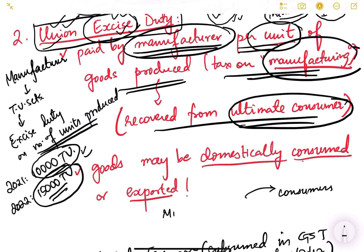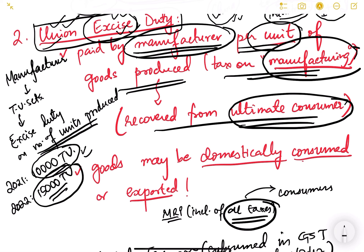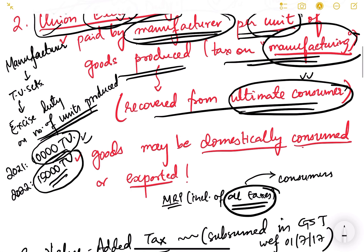Once the manufacturer pays the excise duty on their goods, they will recover it from the consumer — they will not bear the tax burden themselves. The tax burden is shifted to the consumers. We see this as MRP — maximum retail price inclusive of all taxes. So the price the consumer pays also includes these excise duties. This is known as shifting of tax burden. In indirect tax, the tax burden is shifted from one person to another, and ultimately the final consumer bears the burden.